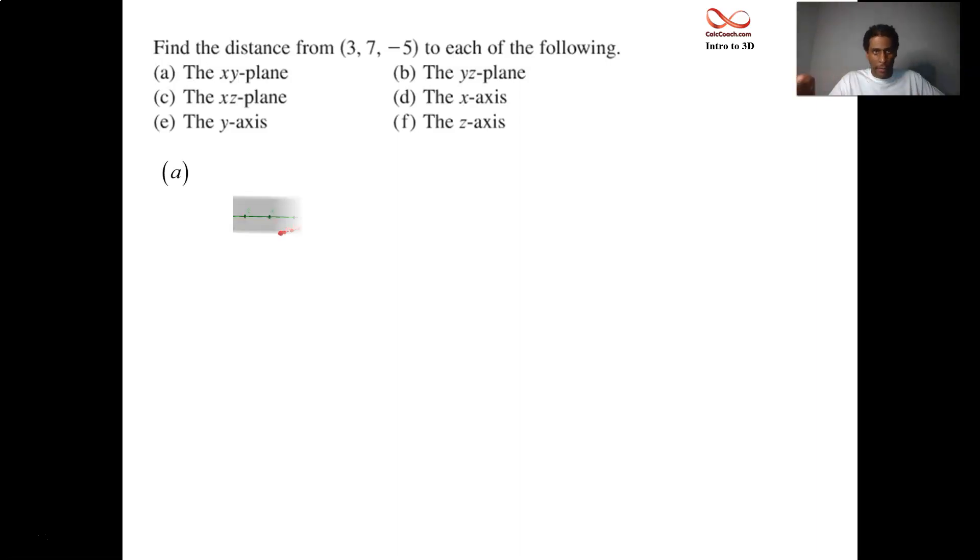So we have the point (3, 7, -5). We want to know how far it is away from the xy-plane. We need a visual. So the xy-plane, and we have the point (3, 7, -5), we'll go down 5. How far is it away from the xy-plane? How much did you go down? That's how you get it. So the xy-plane has coordinates z equals 0, you're at z equals -5. How many units are you away from z equals 0? Five.